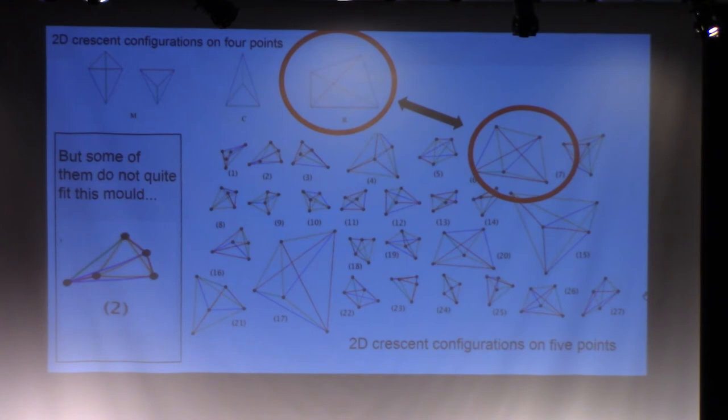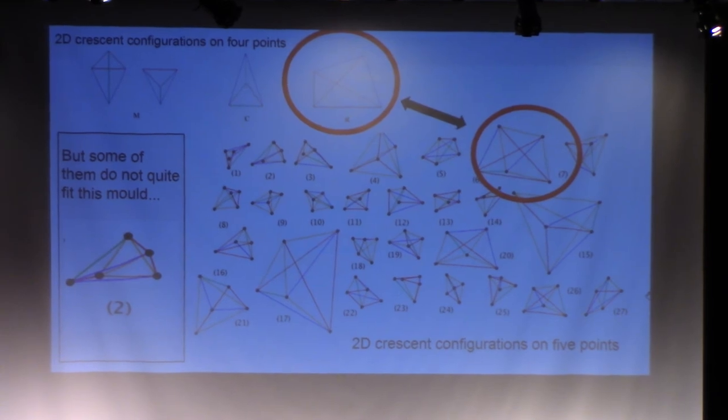So some further work could be done in this area, possibly, if somebody wanted to try to build up instead of narrowing down. So one possibility is that a lot of the Crescent configurations on five points do have a subgraph minus a small exception, and then we can try to find properties of that exception to try to build up from there.